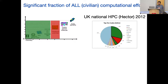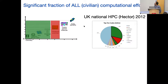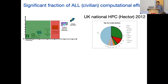Just to show you this is not a niche field — this is a 10-year-old dataset of how the UK national high-performance computing resource, the civilian part of our computing infrastructure, is used. The green part — including this little sliver — is all running electronic structure calculations. The red part is running molecular dynamics without recourse to electrons. About 40% of the computer time in UK civilian use was devoted to solving the electronic structure problem.